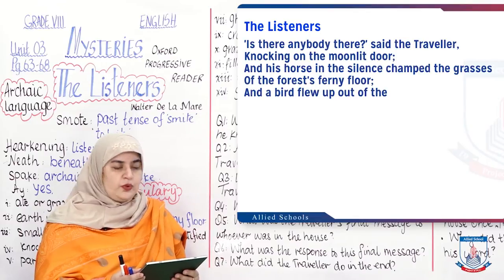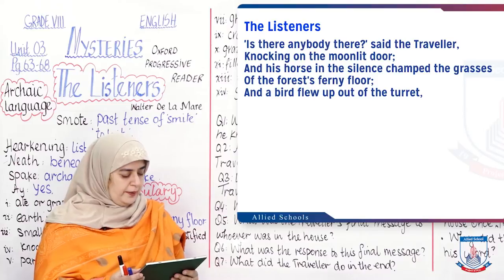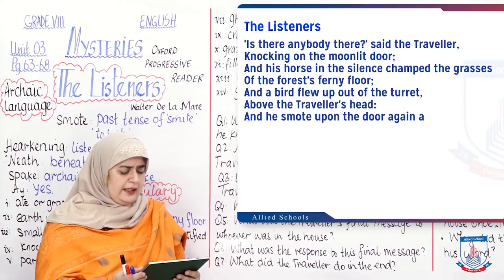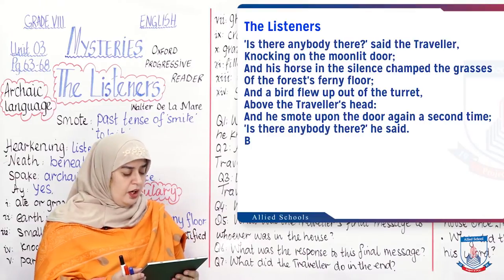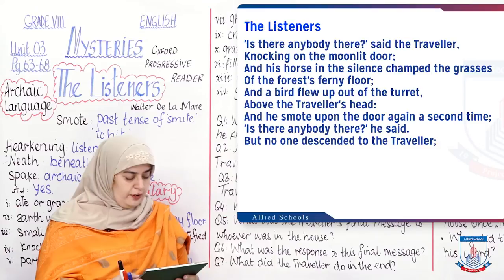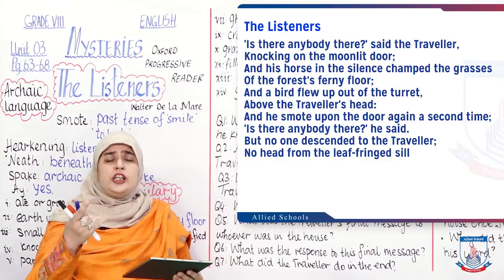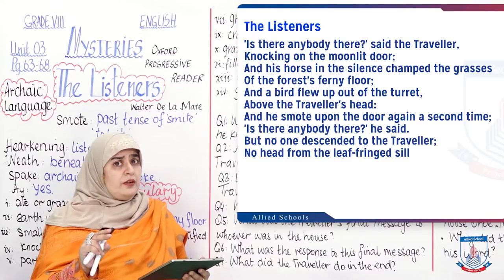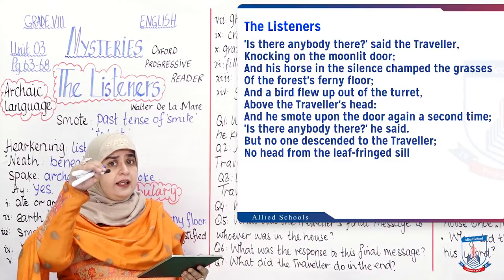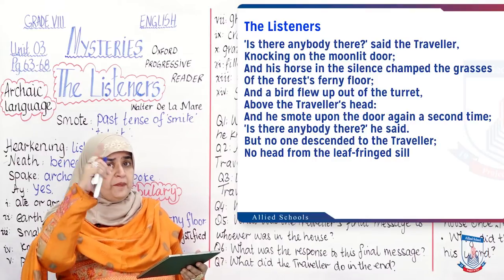In the moonlight a traveller is knocking on one of the doors in the middle of the forest, and his horse is comfortably eating the grass — which means there is no danger around. A bird flew up out of the turret — the turret is a small tower, so a bird flew out from the tower of the house — above the traveller's head. And he smote upon the door again a second time: 'Is there anybody there? Is there anybody there?' he said. But no one descended to the traveller, no head from the leaf-fringed sill.